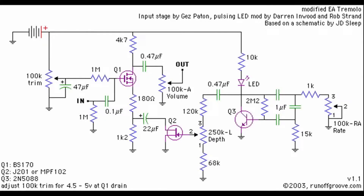To make a tremolo effect, there are a few different ways we can do that. The way we're going to be talking about today is probably the simplest and most straightforward, and that is what is called a bias tremolo — where we're actually modulating the amplification of a transistor based on changing its bias. The one we're going to be looking at is the modified EA tremolo, a classic amongst the DIY community. It's also pretty straightforward and allows us to look at yet another LFO topology to continue expanding our knowledge base for reading schematics.